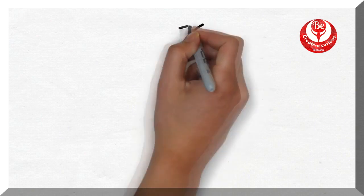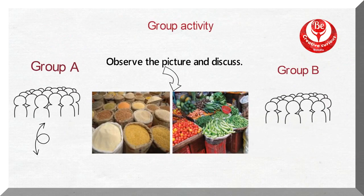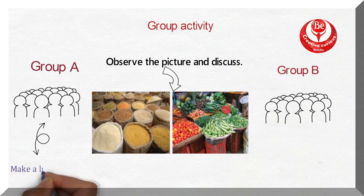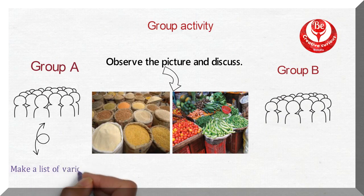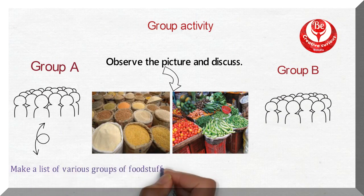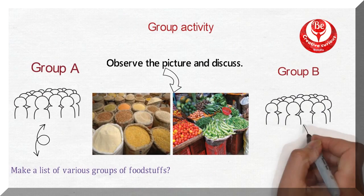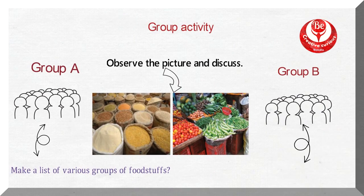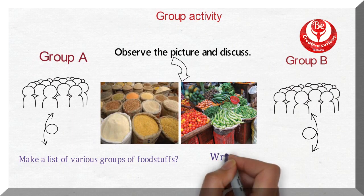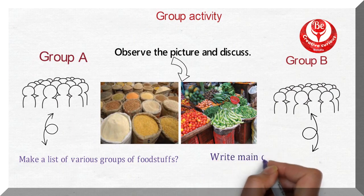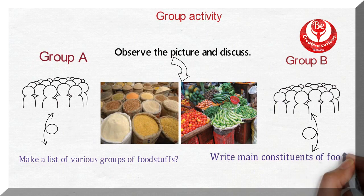For group A, make a list of various groups of food stubs. For group B, write main constituents of food.